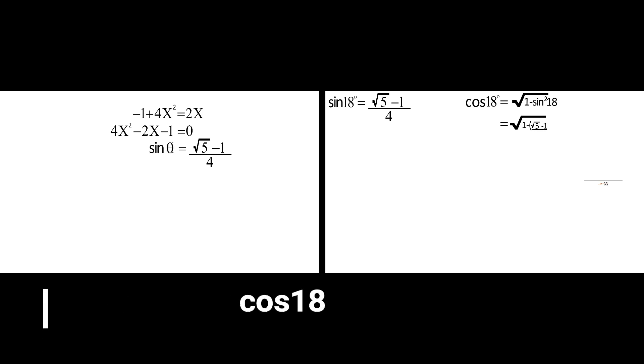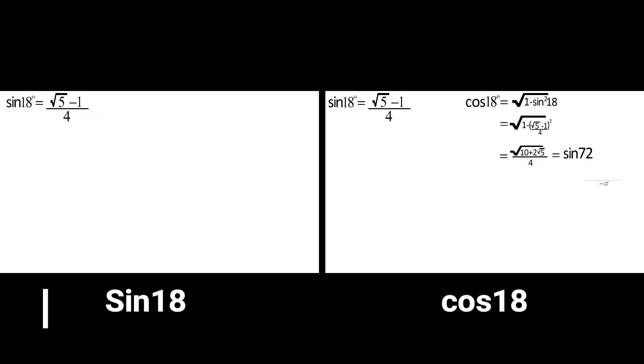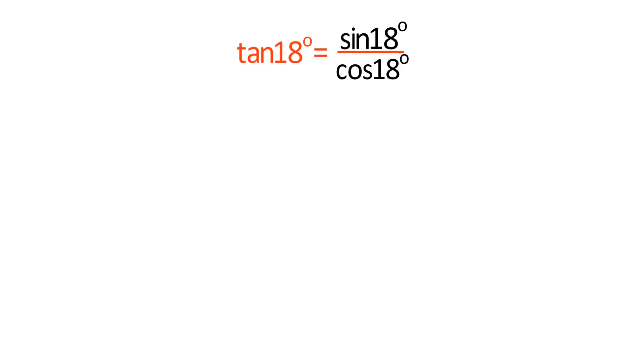We found the value of sine 18 degrees and cosine 18 degrees in our previous video. If you want to watch that video, check the description box below. Now, tangent 18 degrees equals sine 18 degrees divided by cosine 18 degrees.